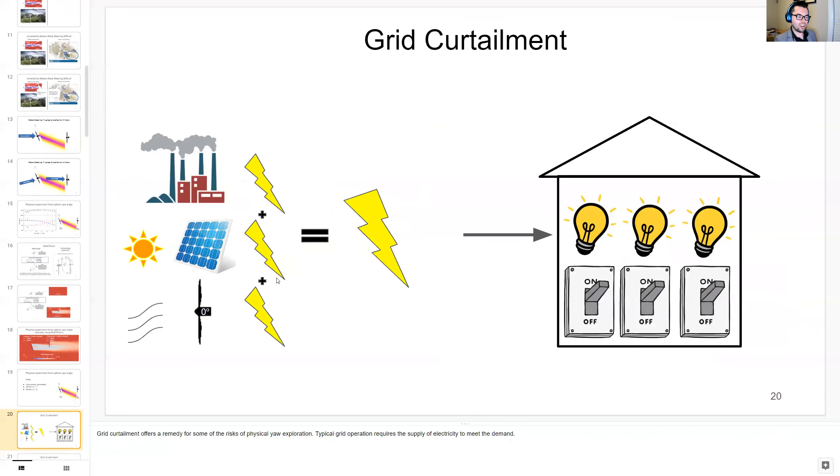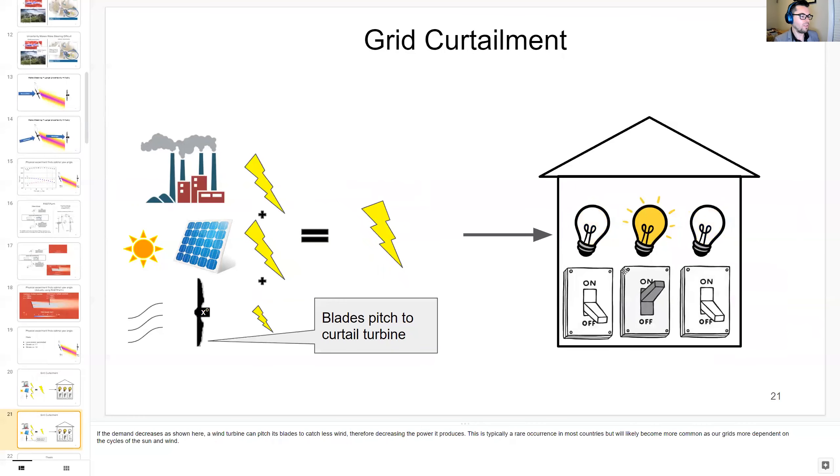Typical grid operation requires the supply of electricity from power plants to meet the demand in the grid, as shown here by these light bulbs on. But on occasion, sometimes demand decreases. A wind turbine can pitch its blades to catch less wind, and therefore decrease the power produced, which is one of many possible ways for grid power plants to reduce supply to meet this demand.